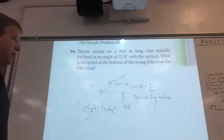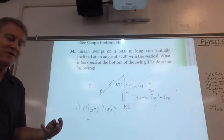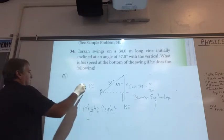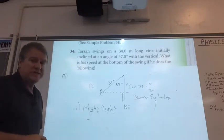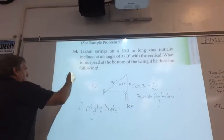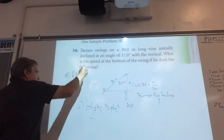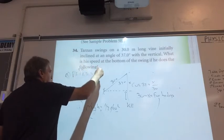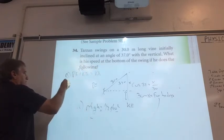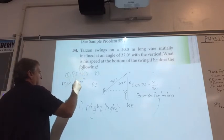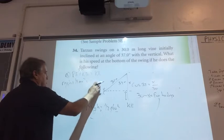The second part is: what if he's pushed at 4 meters per second? So for part B, he's not just starting with potential. He's got a push, so he's got potential and kinetic. The PE and KE at the top equals the KE at the bottom.